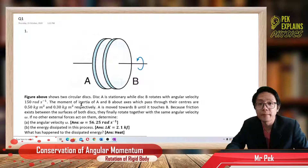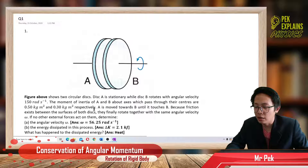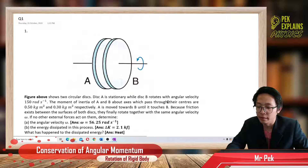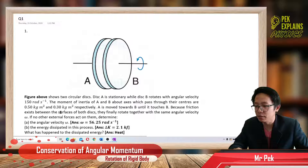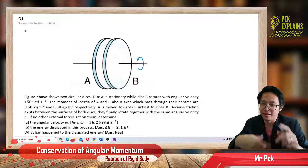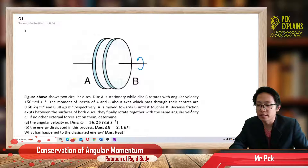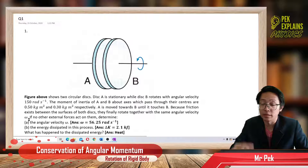So given their moment of inertia IA and IB. Now A is moved towards B until it touches B. A later combines with B because friction exists between the surfaces, and they finally rotate together with the same angular velocity omega — the final angular velocity after they combine.